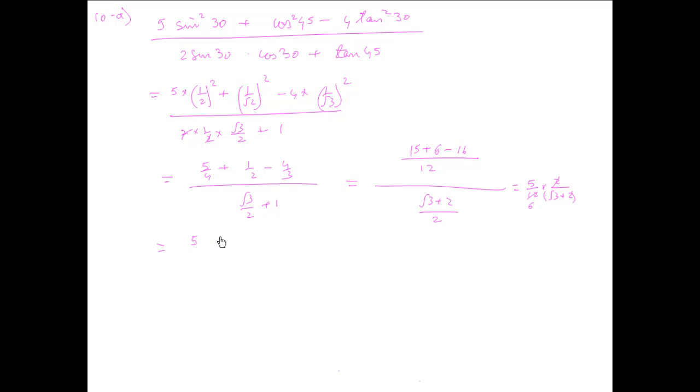That becomes 5 times root 3 minus 2 upon 6 times root 3 plus 2, times root 3 minus 2. That gives us negative 1, so it becomes negative 5, or rather